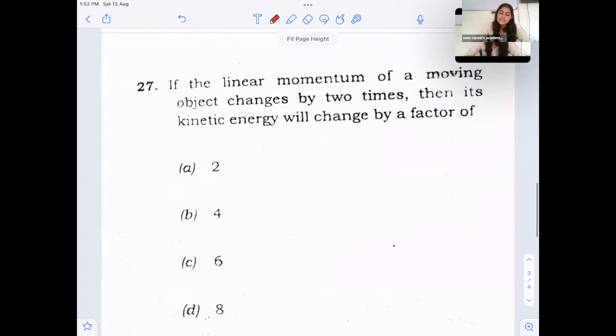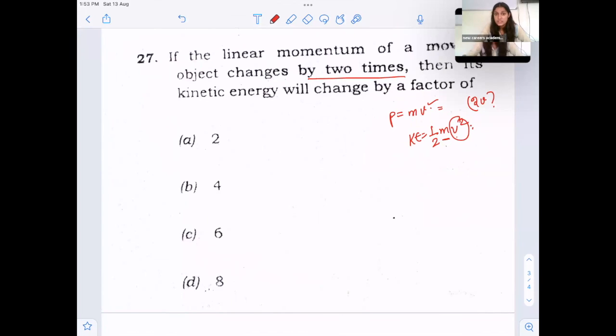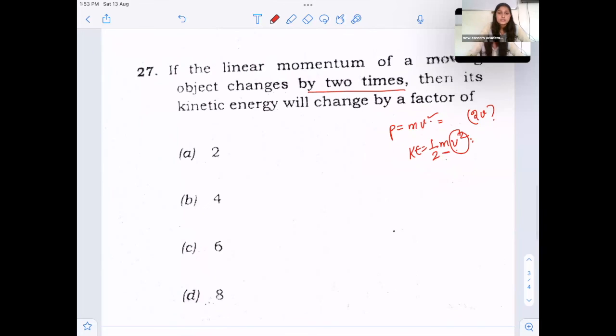Next question. So here formula for kinetic energy is given. Next question is, the linear momentum of a moving object changes two times, then the kinetic energy will change by the factor. So, in this question, you need to know two formulas. First is for linear momentum, which is mass into velocity. And next is formula for kinetic energy, half mass into velocity square. So, what is given? Momentum changes by two times. So, that means momentum doubles. Momentum doubles when velocity doubles. Mass remains constant, mass won't change. So, that means velocity becomes 2v. So, when we put this value here, we get 4 times as answer. So the kinetic energy will change by the factor of 4. So, option B.